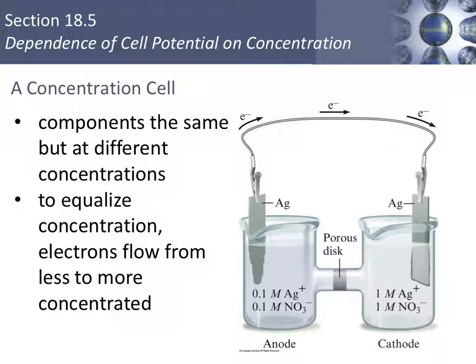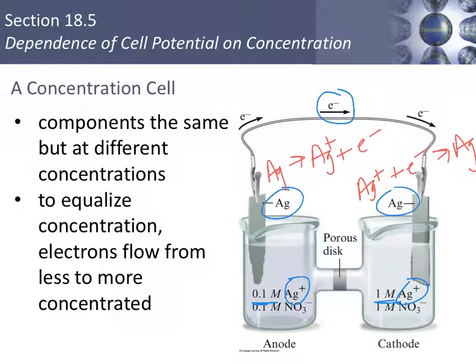Finally, let's look at concentration cells. This is where you have the same components, but the concentrations are different. So in this example, notice that we have silver for each of our electrodes, and then silver ion, but they're at different concentrations, 1 molar versus 0.1 molar. The electrons flow from less to more concentrated, as you can see here in the diagram. This is to equalize concentration. Here's the half reaction for the anode, where we are making silver ion, increasing the concentration. And then here's the half reaction at the cathode, where the silver ion is a reactant. So that would decrease its concentration. Also notice in this diagram how we are using up silver metal, and silver metal is plating over here.